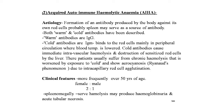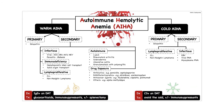Patients usually suffer from chronic hemolysis worsened by exposure to cold, showing acrocyanosis (Raynaud's phenomenon) due to intracapillary red cell agglutination. Clinical features: more frequently seen over 50 years of age; female to male ratio is 2:1; splenomegaly; severe hemolysis may produce hemoglobinuria and acute tubular necrosis. AIHA is of two types — warm and cold — each with primary and secondary forms. Secondary warm AIHA includes infectious, immunodeficiency, lymphoproliferative, autoimmune, and drug-exposure causes.